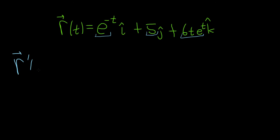So r prime of t is equal to... So for the first piece, the derivative of e to the x is e to the x. So here it's e to the negative t times the derivative of the inside function. The inside function in this case is negative t, and its derivative is negative 1.